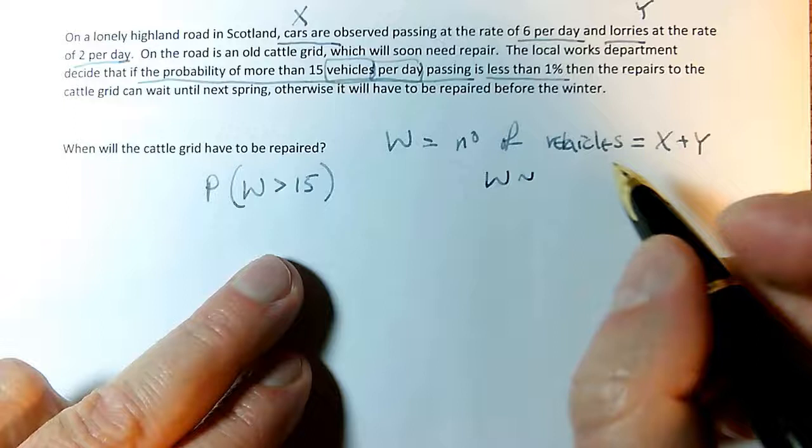All of these are ticks. My inclusion box has to go all the way to the end. And my exclusion box - I need to get rid of all the crosses, including 15. So it's 1 minus the probability of W being less than or equal to 15.